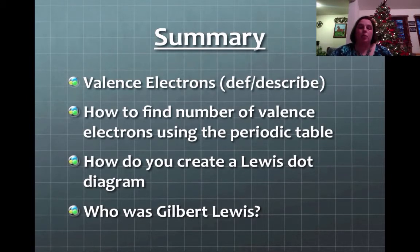All right. Summary. I want you to be able to define or describe valence electrons. Tell me how to find the number of valence electrons using the periodic table. Make sure you know how to create a Lewis dot diagram. And who was Gilbert Lewis? Why is he in my old dead dude club?